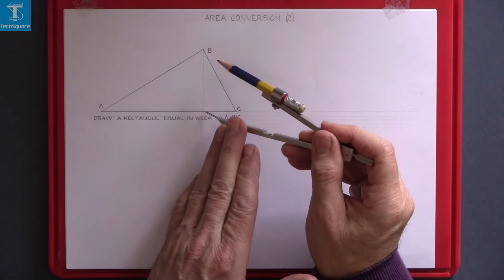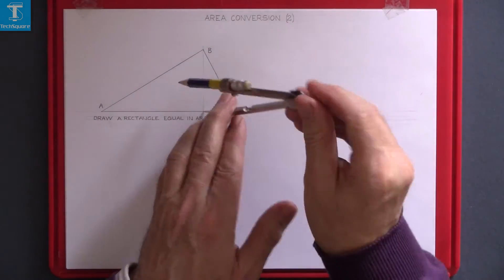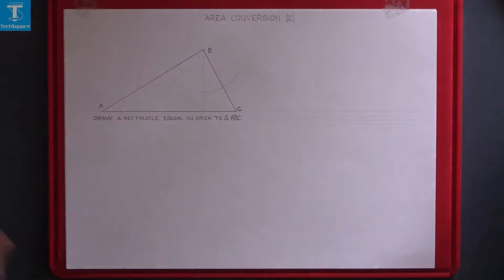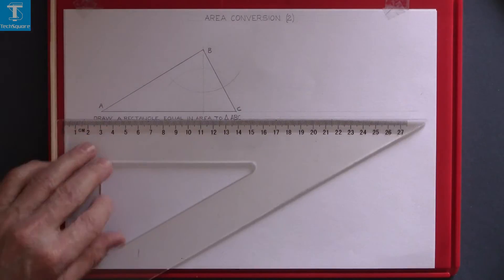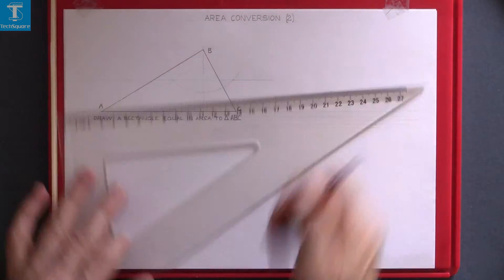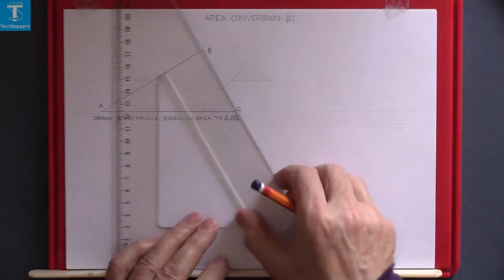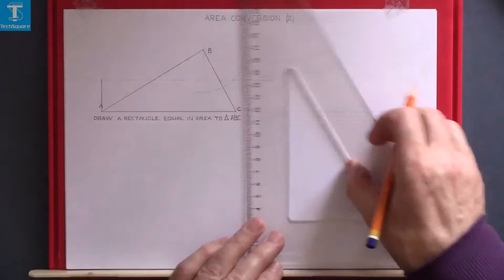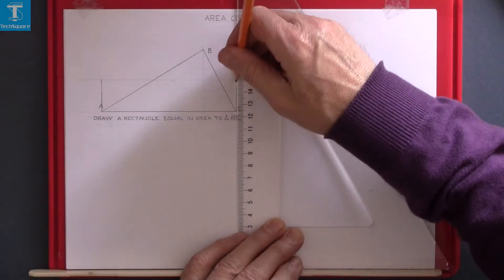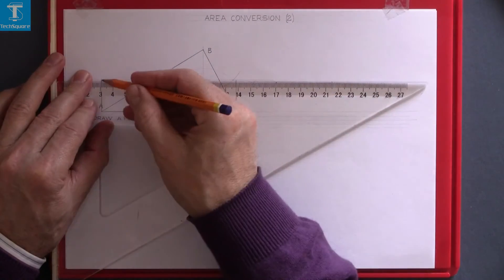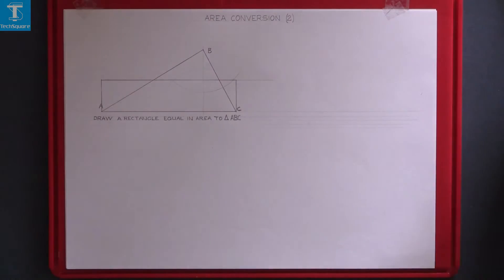The first thing you do is bisect the vertical height, draw horizontally across and draw up from the two points on the base. And that rectangle is equal in area to ABC.